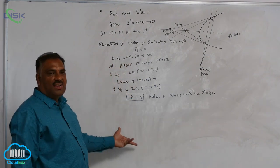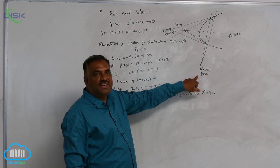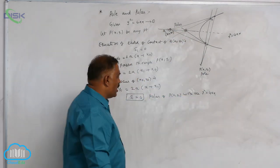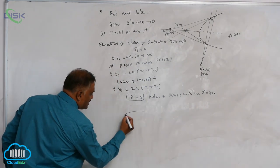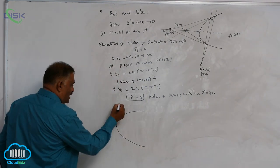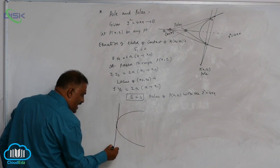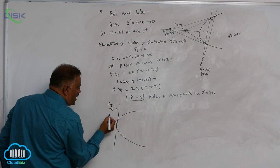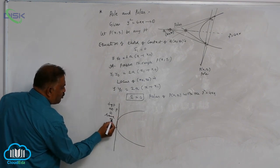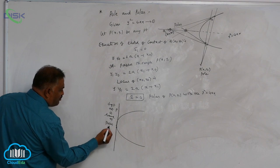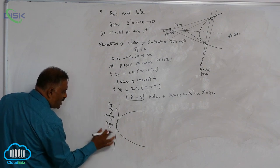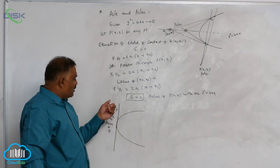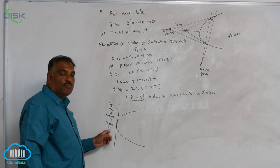When the point lies outside the parabola, the polar intersects the parabola. When the point lies on the parabola — a special case — the polar coincides with the tangent at that point. So when a point lies on the curve, the tangent and polar both coincide.